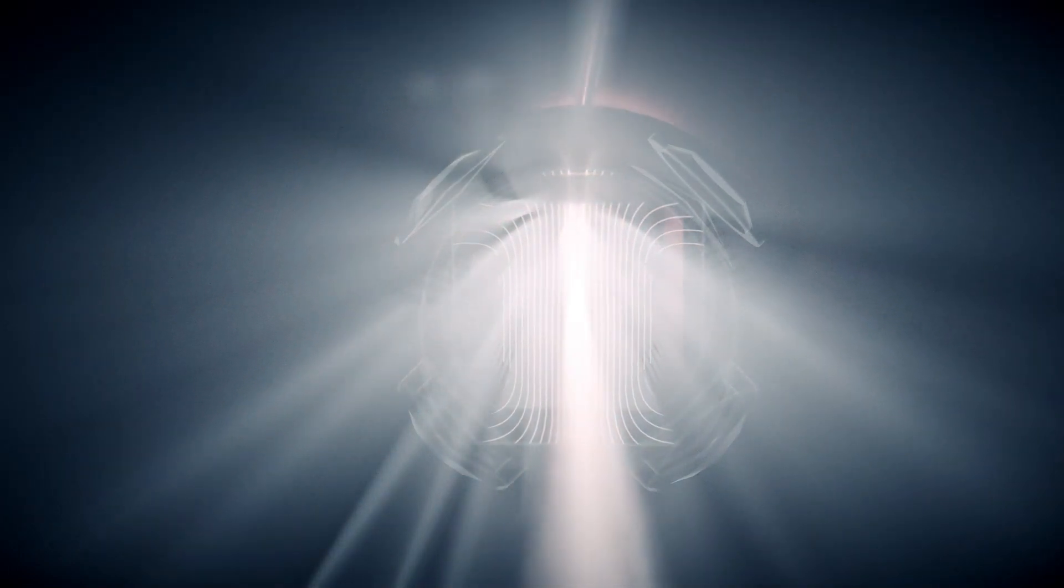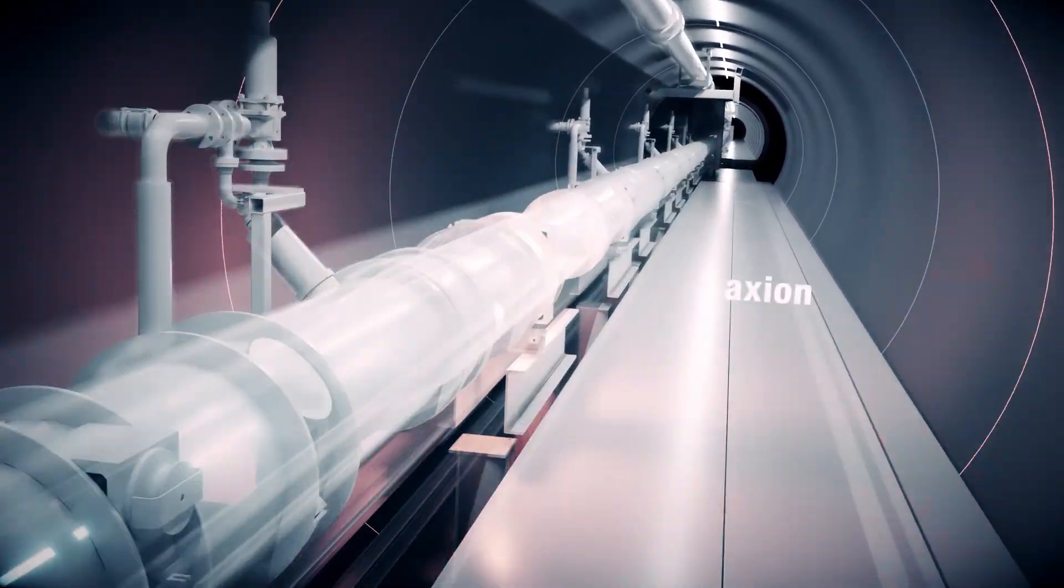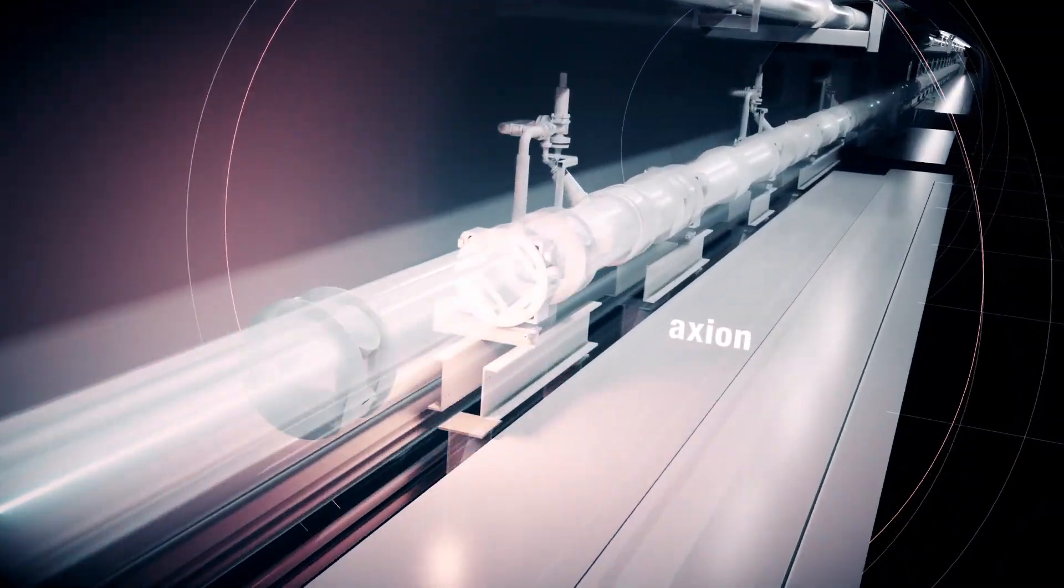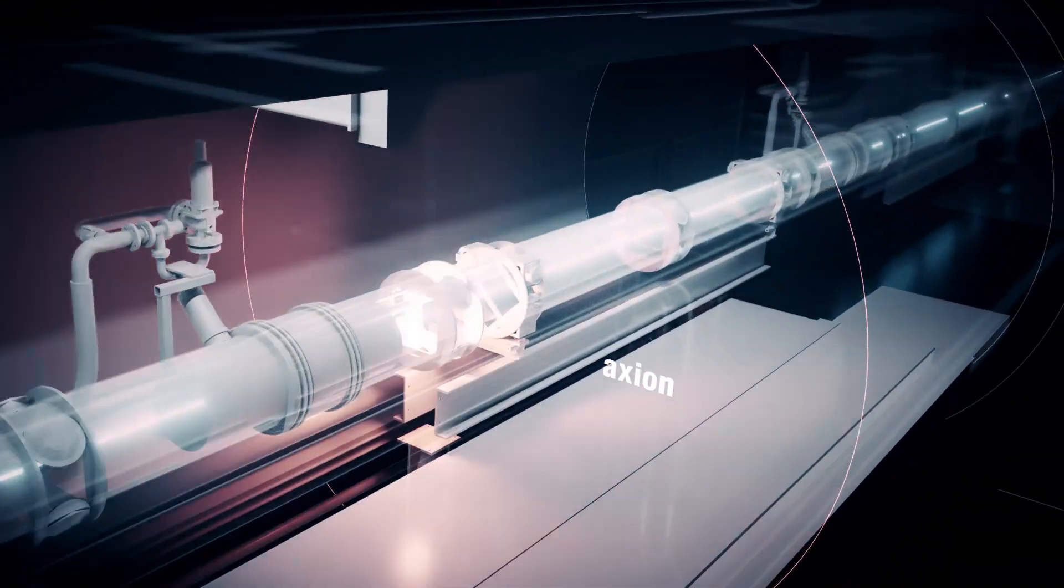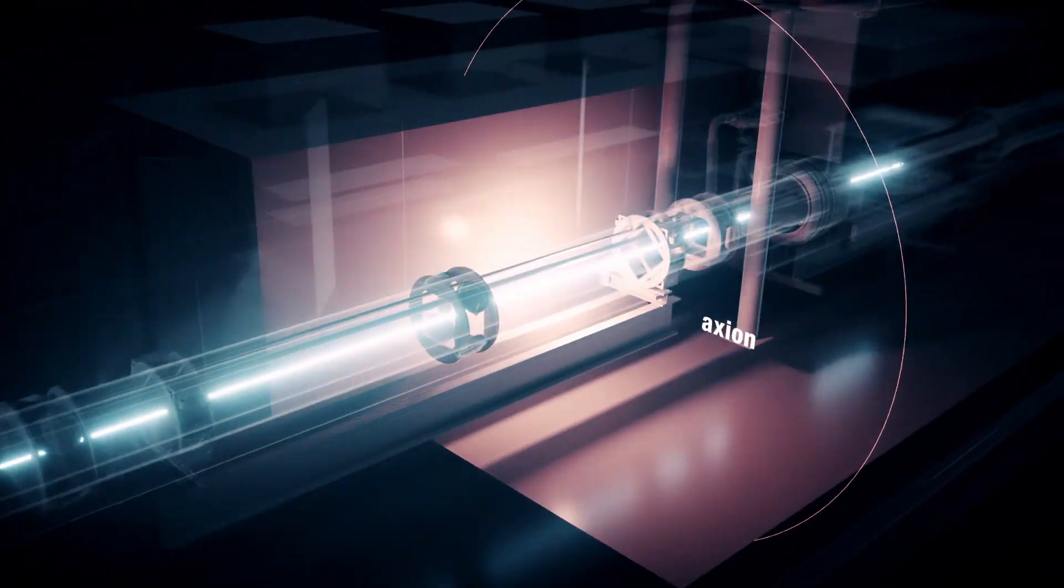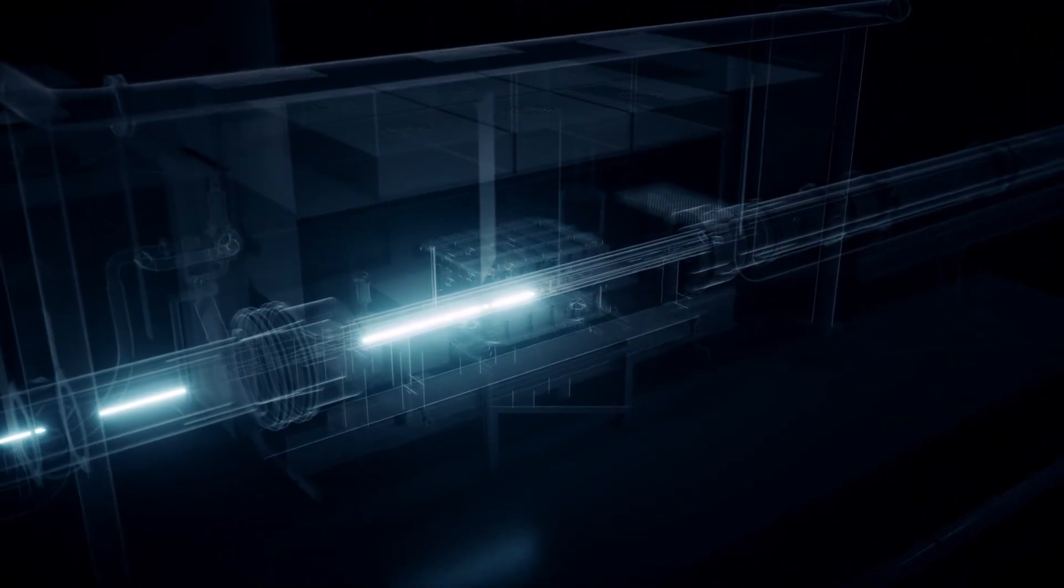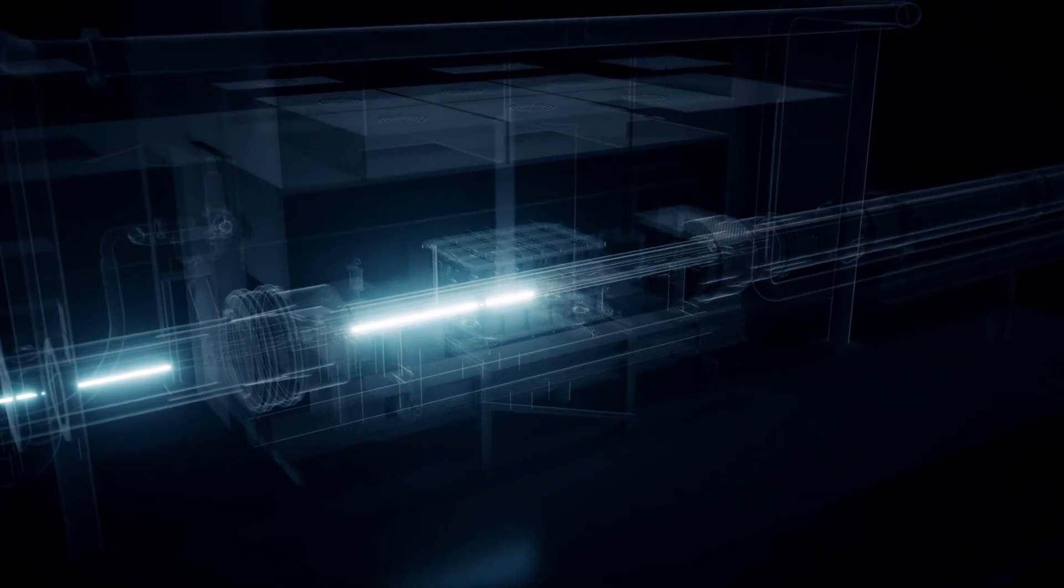According to theory, this is where a particle of light could transform into an axion. Laser light is stopped by the wall. The axion would simply pass through it.